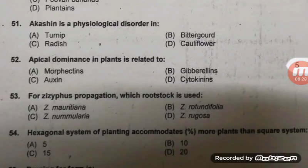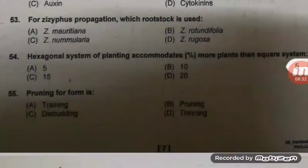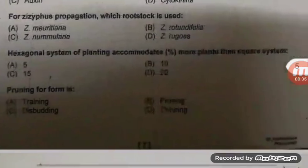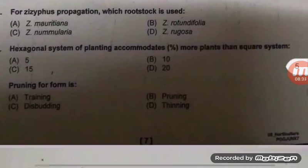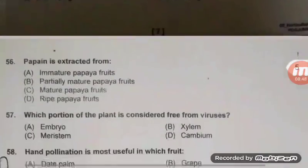For jujube propagation, which rootstock is used? Right answer C — jujube on Ziziphus nummularia; also repeated in JRF 2018. Question 54: Hexagonal system of planting accommodates 15 percent more plants than square system — right answer C. This is also repeated in JRF 2018. Pruning for form is called training — A is the right answer.